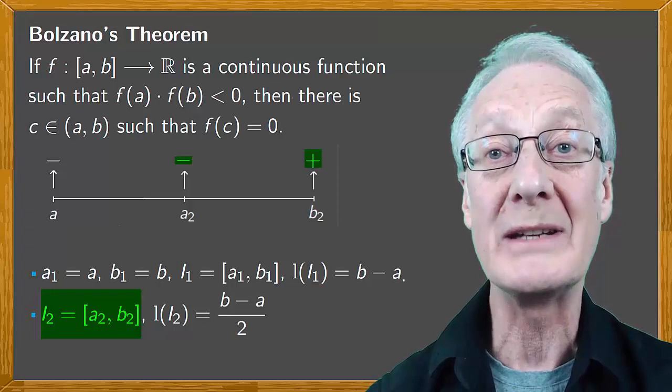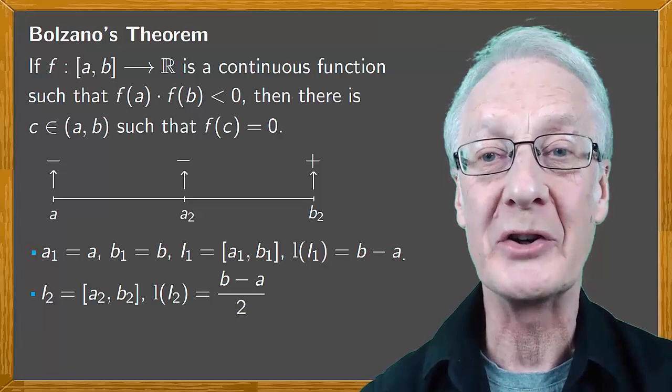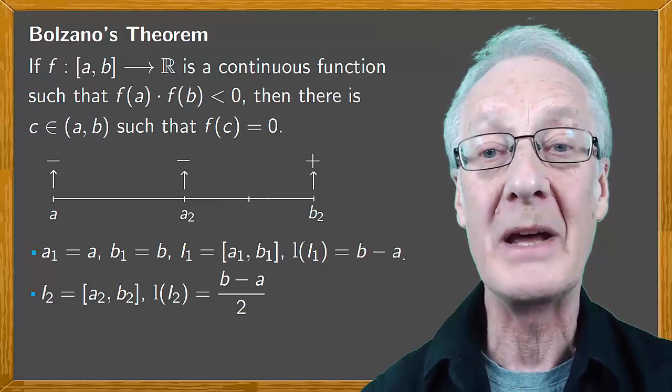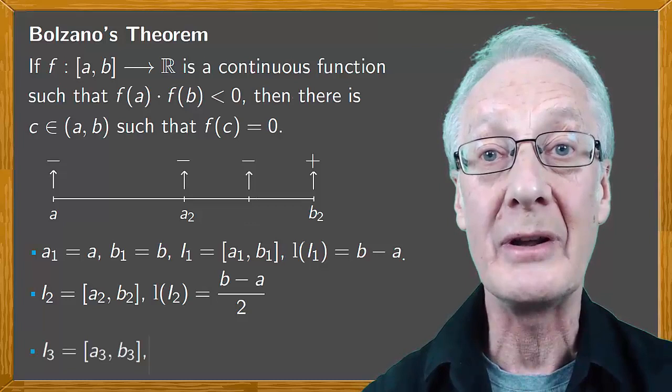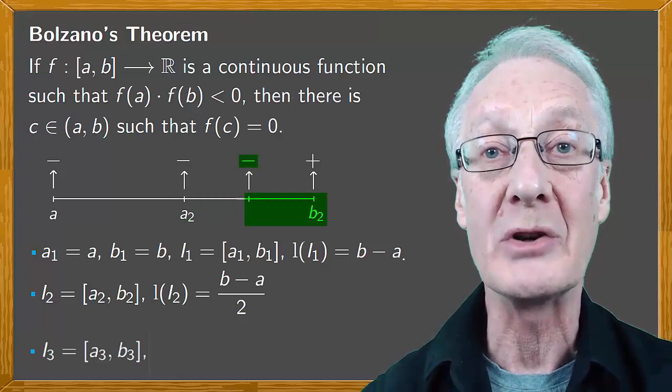Suppose the second situation has occurred. If the image at the midpoint is zero, well we already have c. Otherwise depending on the sign of the image we take the interval from the left or from the right. In any event we now have a new interval I₃ = [a₃, b₃] where the image on the left end is negative, the image on the right end is positive, and the length of the interval is half of the previous one.